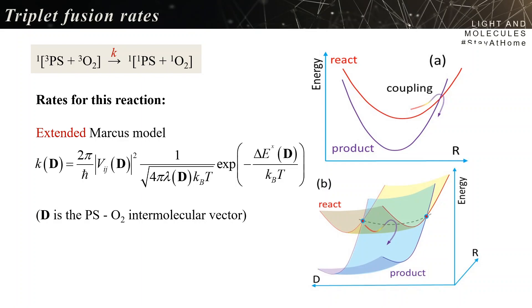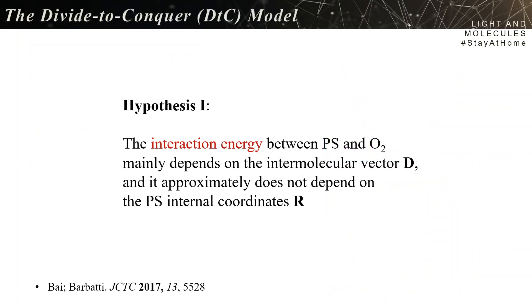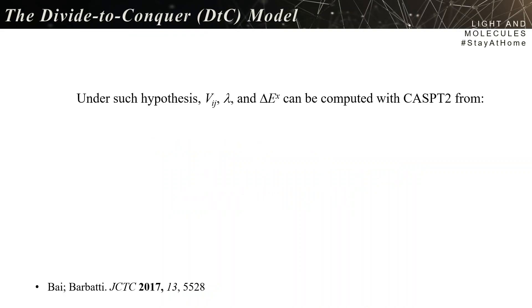Then, to be able to compute the rates, you have a first hypothesis that the interaction energy between the PS and O2 mainly depends on the intermolecular vector d, and it approximately doesn't depend on the PS internal coordinate R. Under such a hypothesis, you can compute the coupling, the reorganization energy, and the delta E, the height of the barrier, with CASPT2, and then from a minimal set of calculation results.